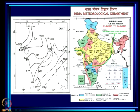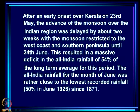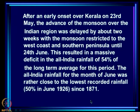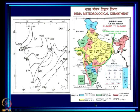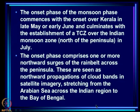This resulted in a massive deficit in the all-India rainfall of 54 percent of the long-term average for this period. The all-India rainfall for the month of June was rather close to the lowest recorded rainfall, which is 50 percent in June 1926 since 1871. So it was close to a record in terms of deficit in June, and of course this was not predicted by anybody.